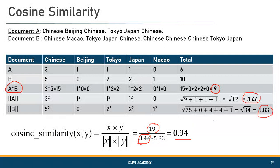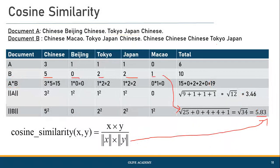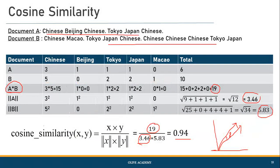The cosine similarity is 19 divided by (3.46 × 5.83), giving 0.94. This means the two documents are very close to each other — the theta value is very small. Even manually inspecting the documents, they appear almost similar, which is what cosine similarity confirms. In contrast, the Jaccard index gave 0.6, which is less accurate here because the Jaccard coefficient does not consider the number of occurrences — it only checks presence — whereas cosine similarity depends on the actual frequency of words.